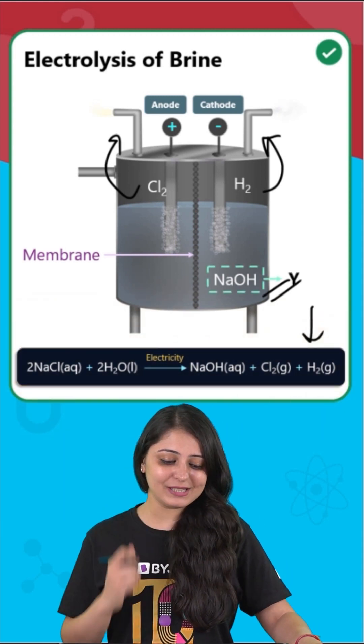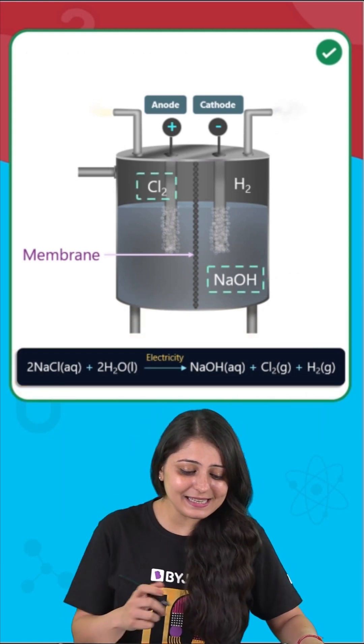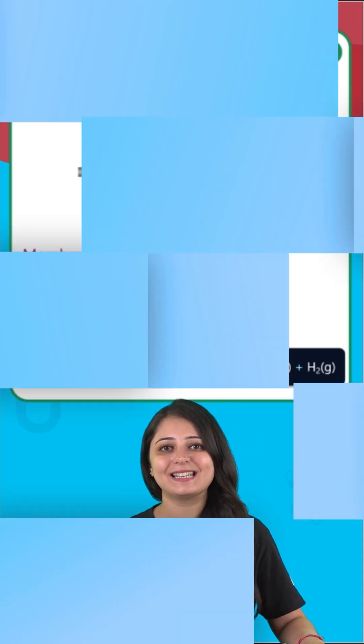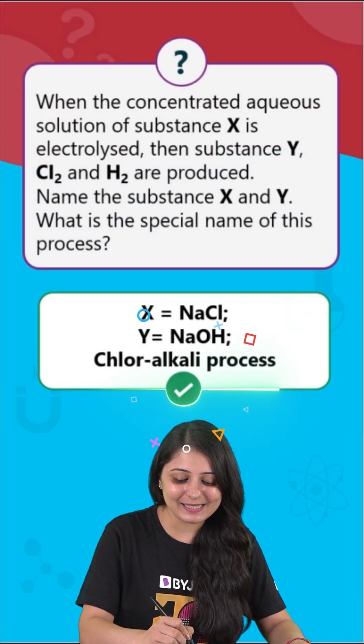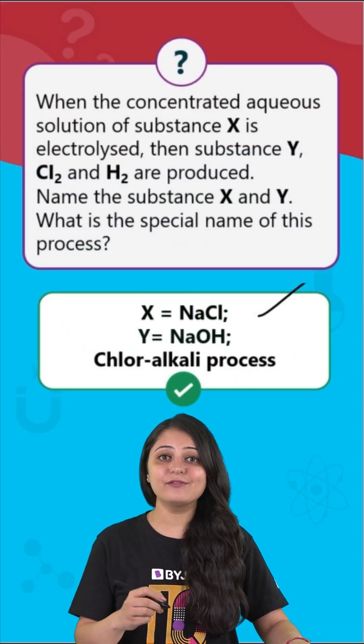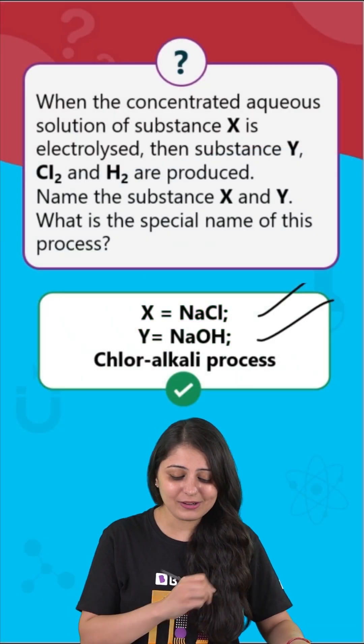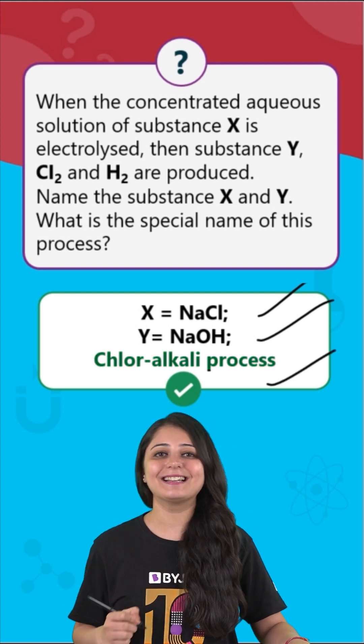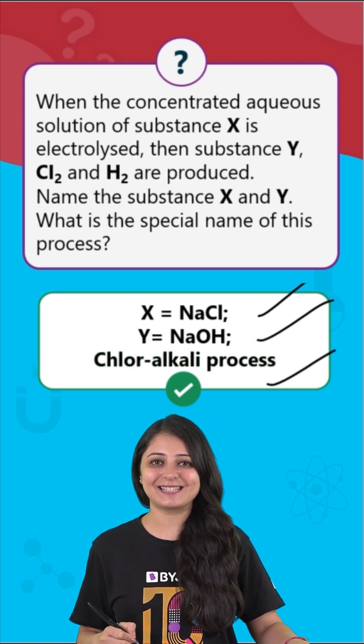And the name of this process is the chloralkali process. So X is sodium chloride, Y is sodium hydroxide and the special process is the chloralkali process.